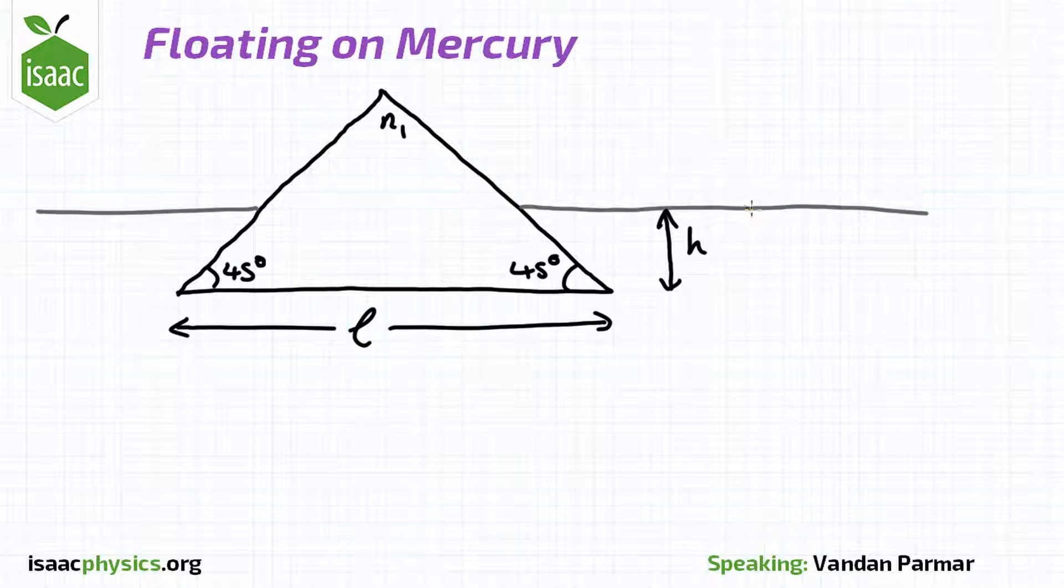We are interested in the lowest ray to emerge parallel to the surface of the mercury. By symmetry, this ray must also be incident parallel to the surface of the mercury.